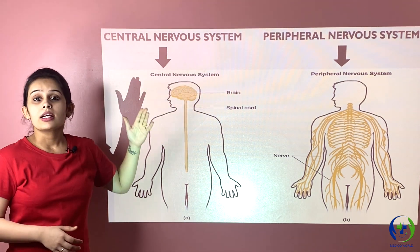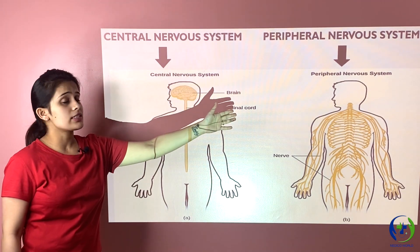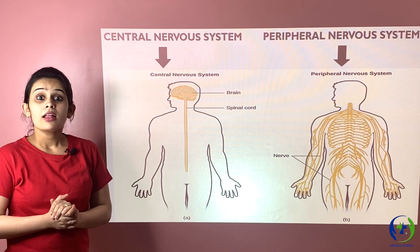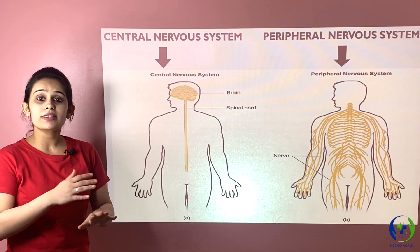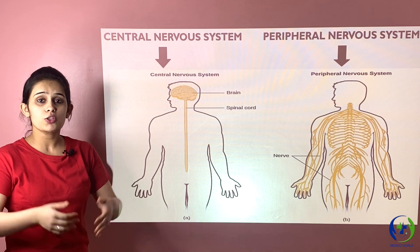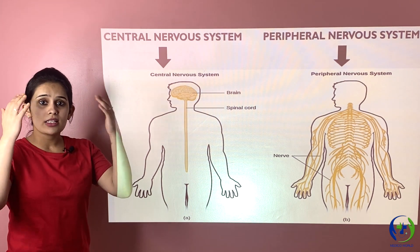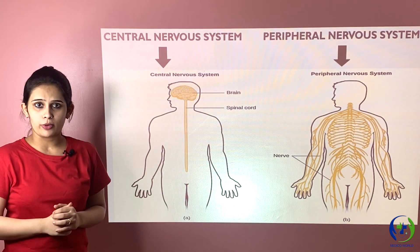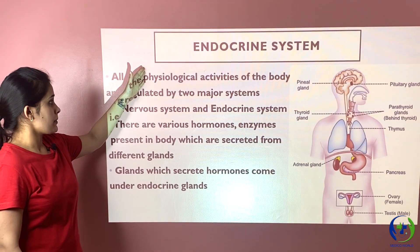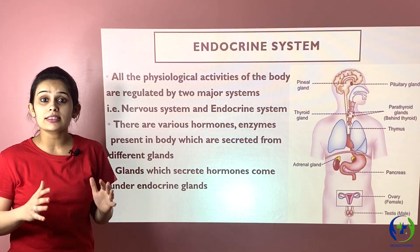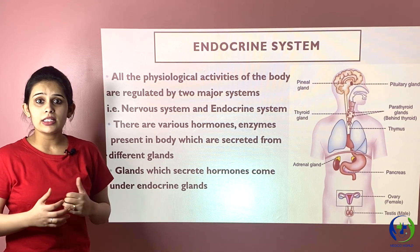The nervous system is divided into the central nervous system and the peripheral nervous system. The central nervous system consists of the brain and spinal cord, while the peripheral nervous system consists of nerves. The afferent nerves transport signals from different parts of the body to the brain, while the efferent nerves transport signals from the brain to different parts of the body.